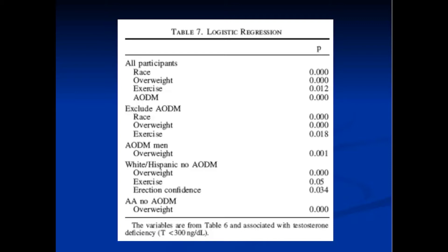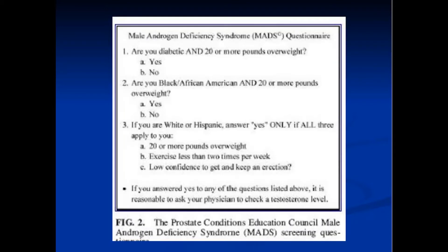Logistic regression threw out the non-significant variables. For all participants, what remained significant was race, overweight status, frequency of exercise, and presence of diabetes. For non-diabetic patients, race, overweight status, and exercise frequency stayed in. For non-African-American, non-diabetic patients — which is most patients we see — overweight status, exercise frequency, and confidence to keep erection remained. For African Americans who are not diabetic, just overweight status remained.